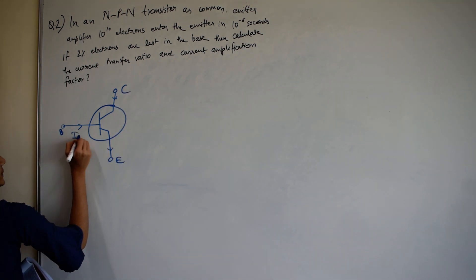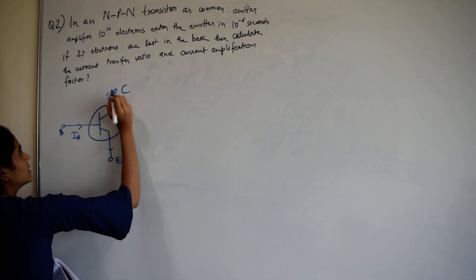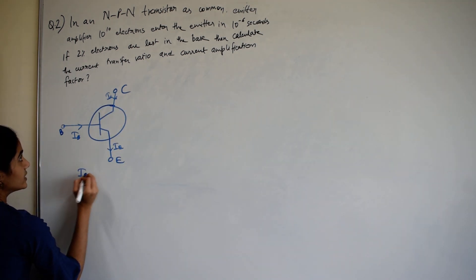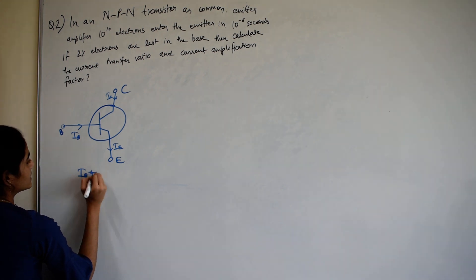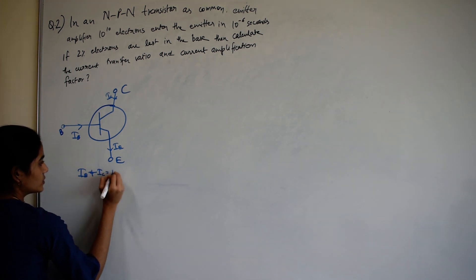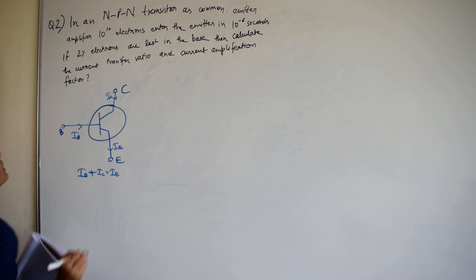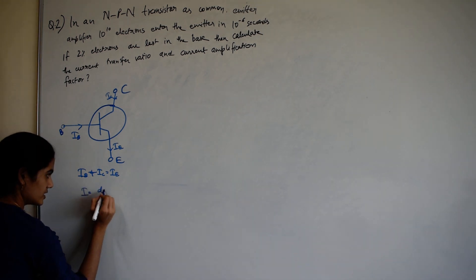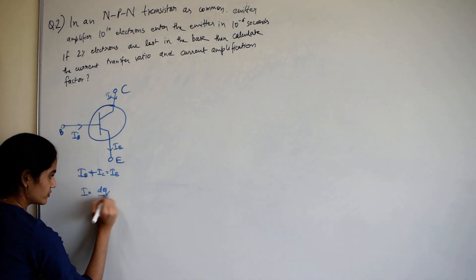Current IC and current IE. So IB plus IC equal to IE here and current equal to rate of change of charge.